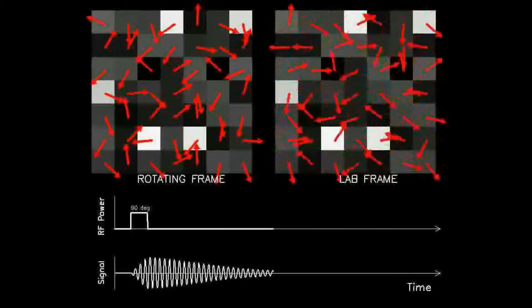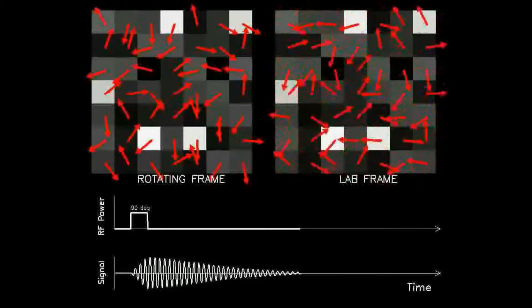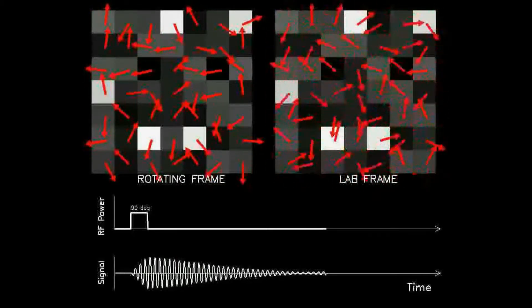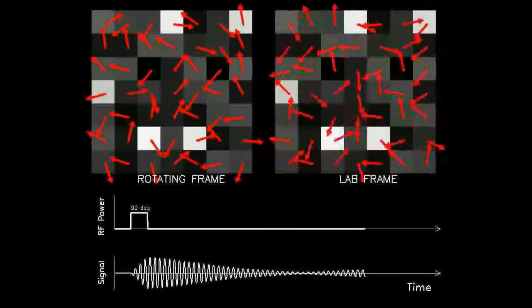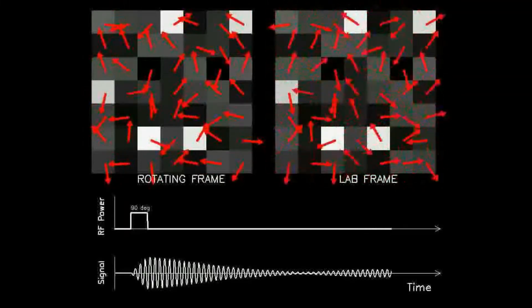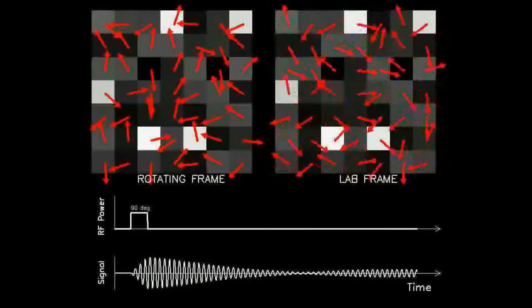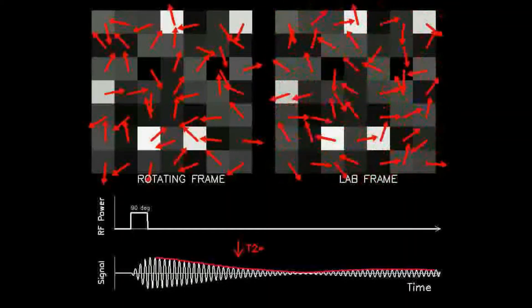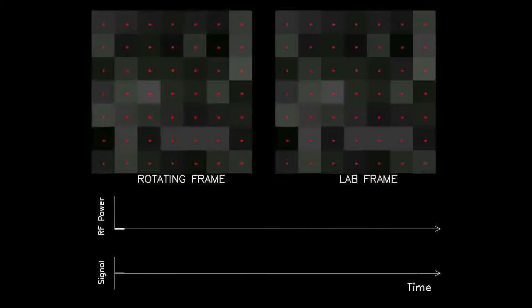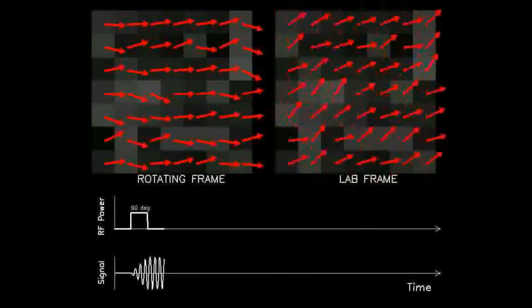The timescale for this decay to reach 37% of the maximum value is the T2 star time. To reemphasize, both this animation and the previous animation demonstrate signal loss caused by dephasing, in this case due to inhomogeneities, while in the previous case due to spin-spin interaction.